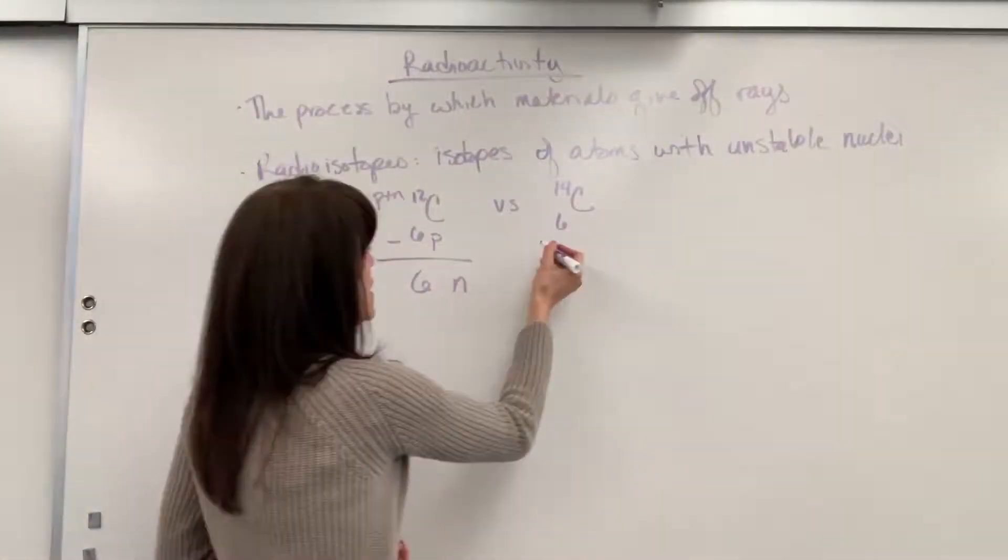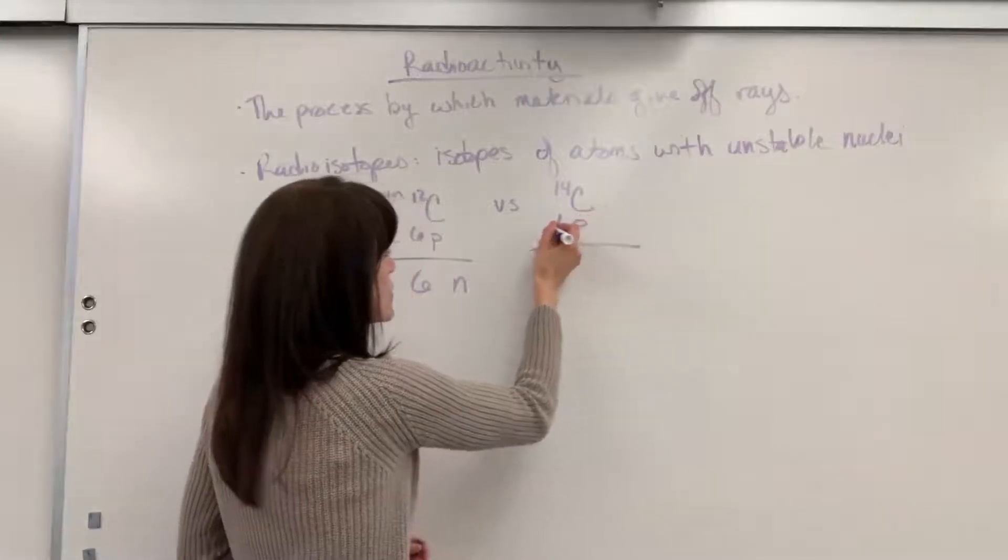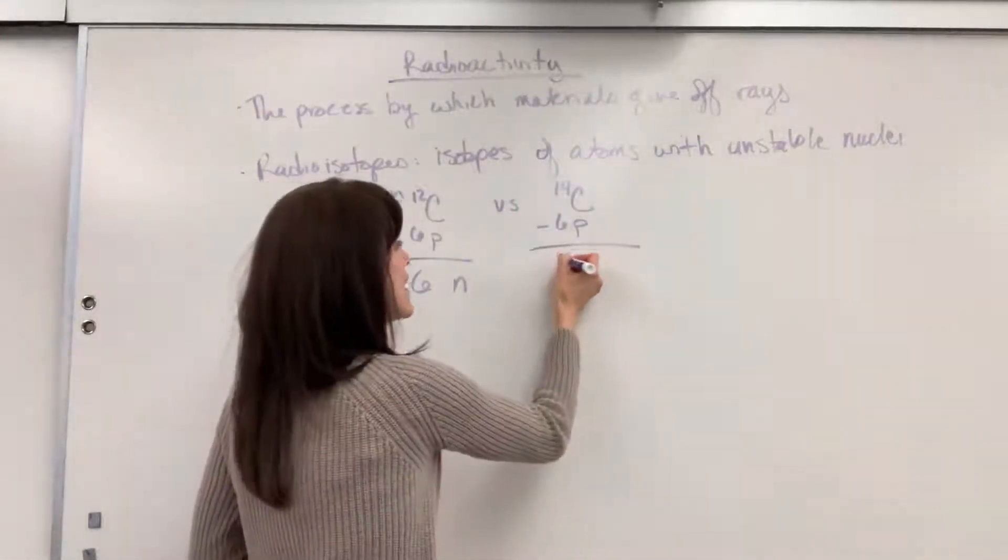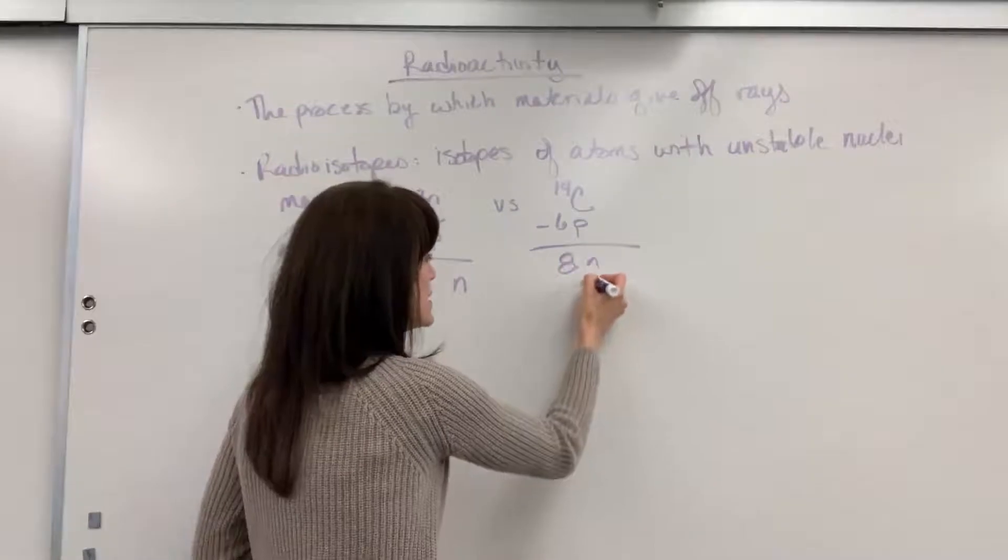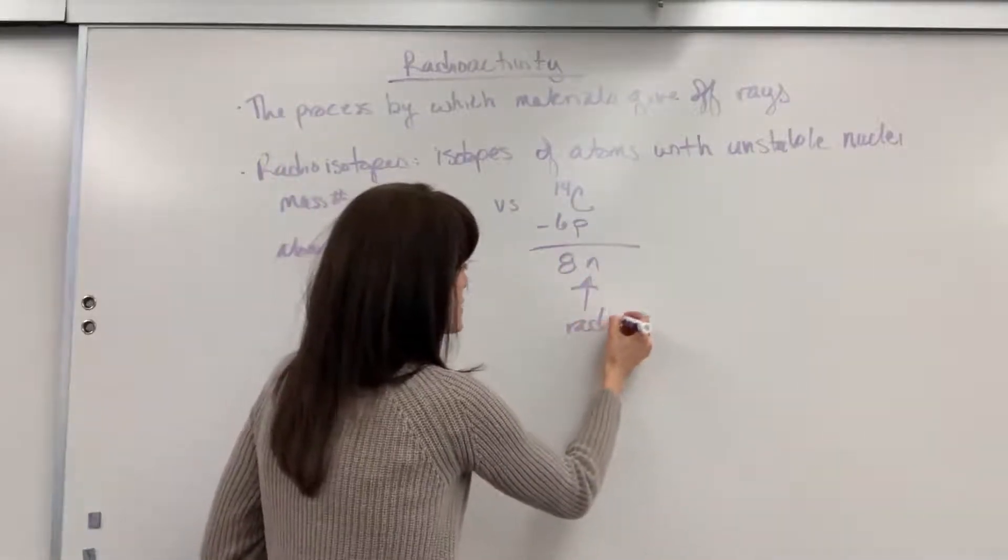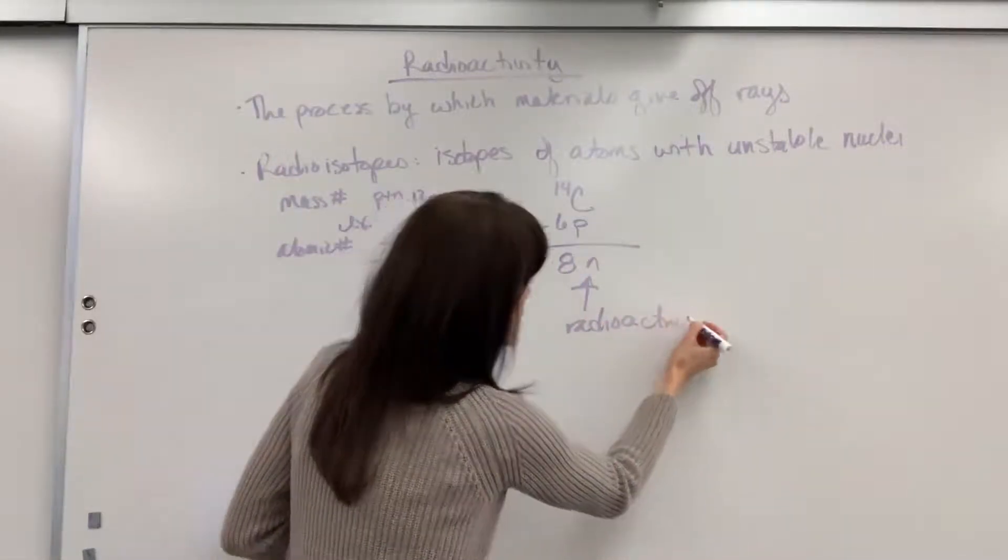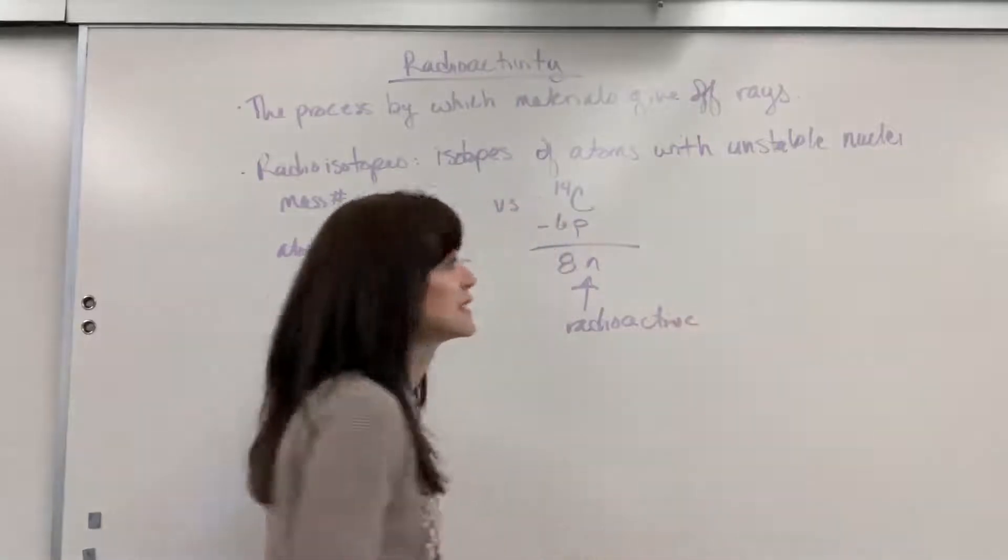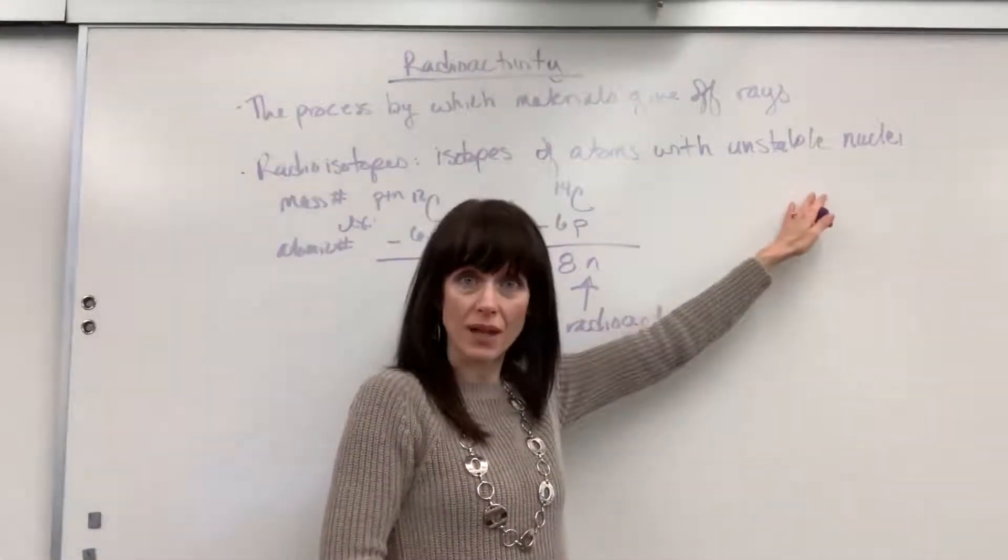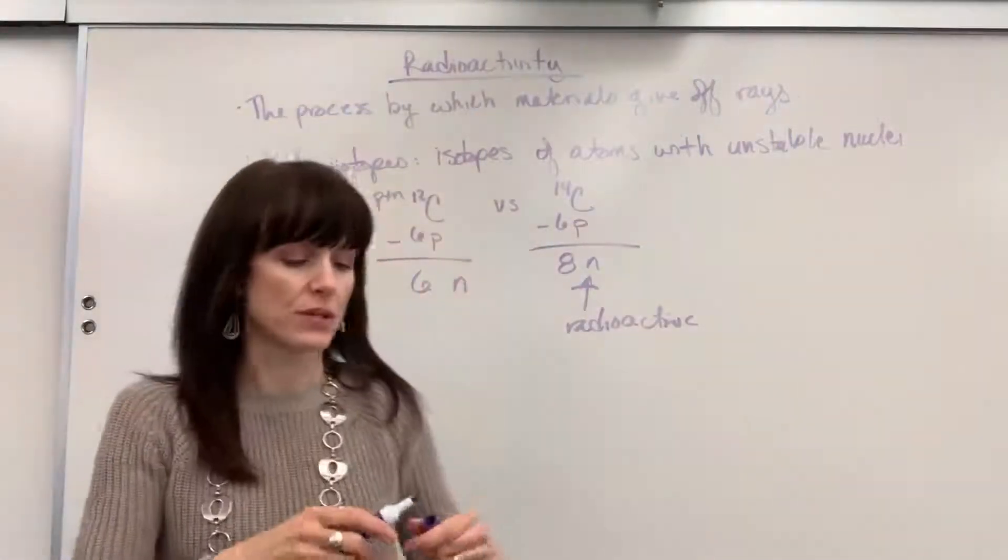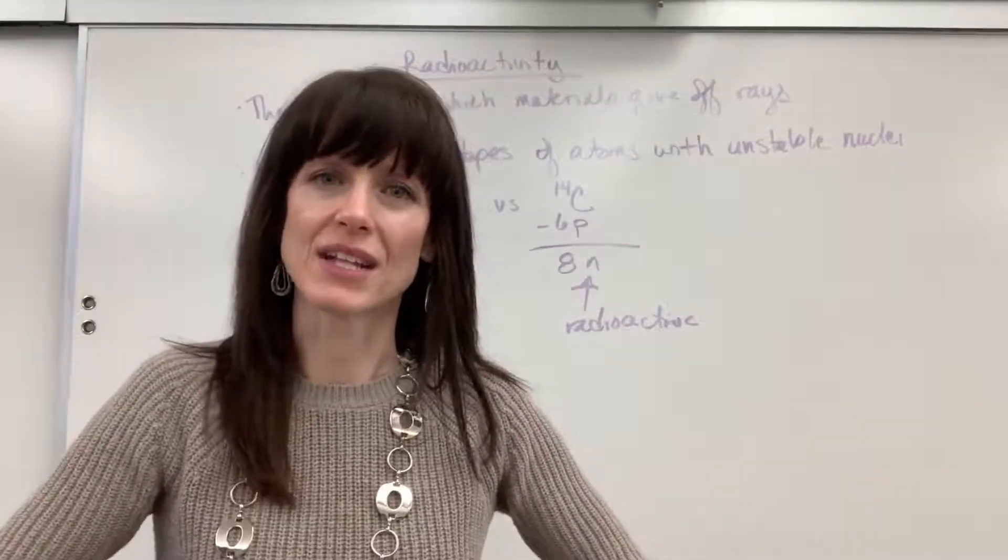Carbon-14, of course, we've got the six protons. If we subtract from the mass number, we're going to have eight neutrons. This is radioactive, which means it has an unstable nuclei, and so it's going to emit some sort of radiation as it decays.